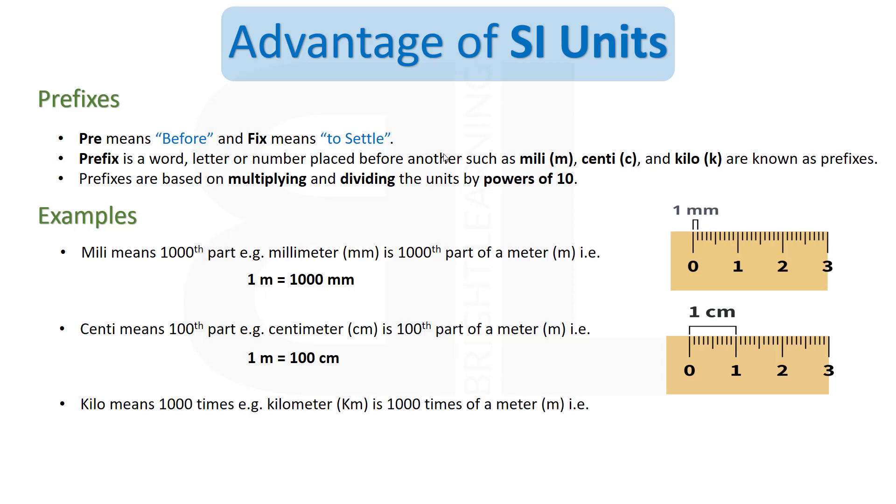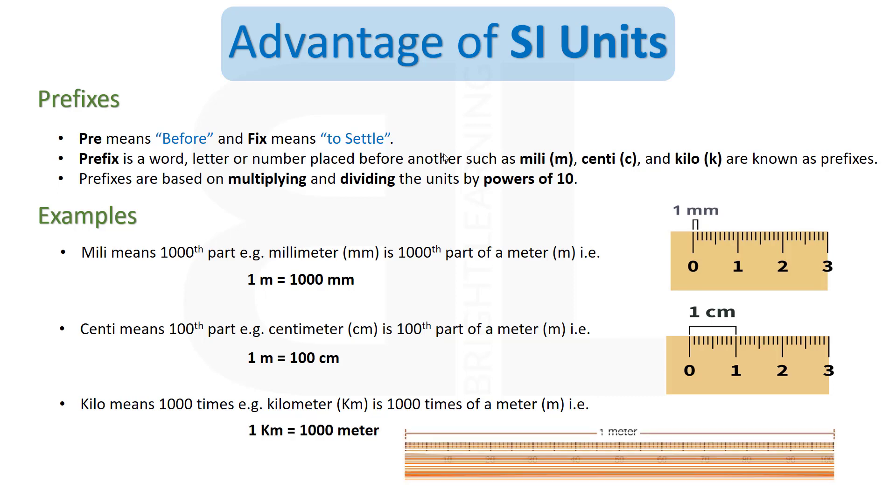Kilo is the bigger unit, that is thousand times any other unit of length or mass. For example, one kilometer is thousand times a meter. That is, 1 km = 1000 m.